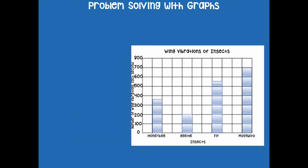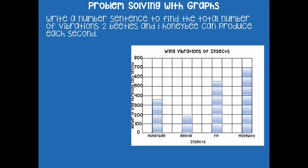Now we're going to use our bar graph to do some problem solving. Write a number sentence to find the total number of vibrations two beetles and one honeybee can produce each second. One beetle is 200, so two beetles is 200 plus 200. The honeybee is 350, so the number sentence is 200 + 200 + 350. Write that down and solve for it, then click play. 200 + 200 + 350 equals 750.